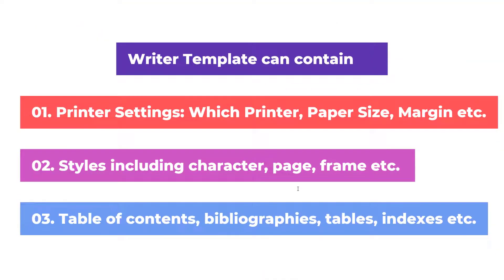Next, what does a template contain? A Writer template can contain printer settings — so apart from just writing, I can also set the printer, paper size, and margin. I can also include styles; you have already learned about styles, so all the styles can be saved in the template. The third one is table of contents — we have already learned about this also — so you can insert a table of contents, bibliographies, tables, indexes, etc.